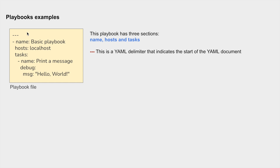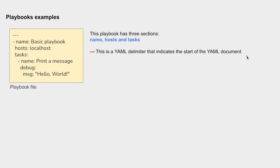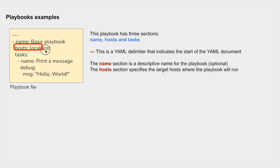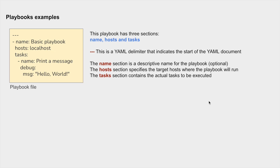This playbook file has three main sections: name, hosts, and tasks. The three dashes at the top are the YAML delimiter indicating this is a YAML document. The name section is a descriptive name for the playbook and is optional. The hosts section specifies the target hosts, and the tasks section contains the actual tasks to be executed on the host machines.